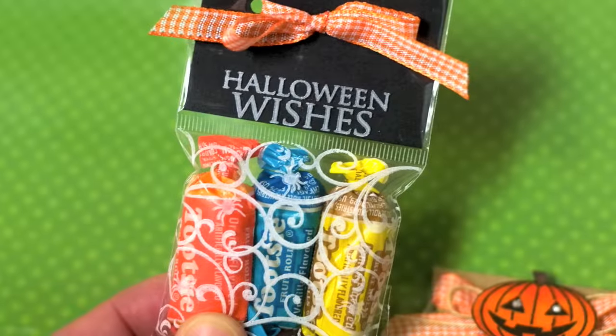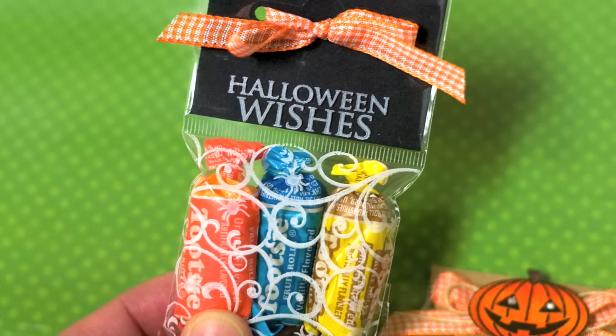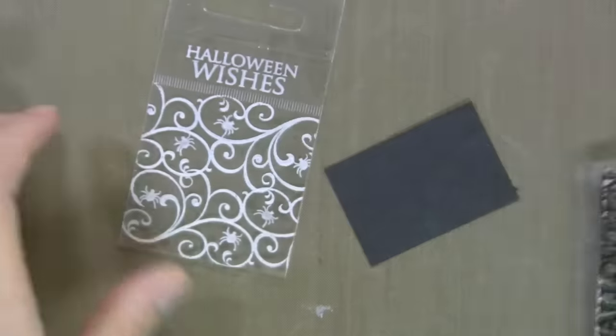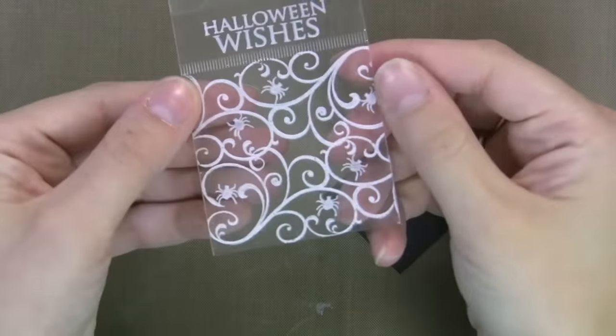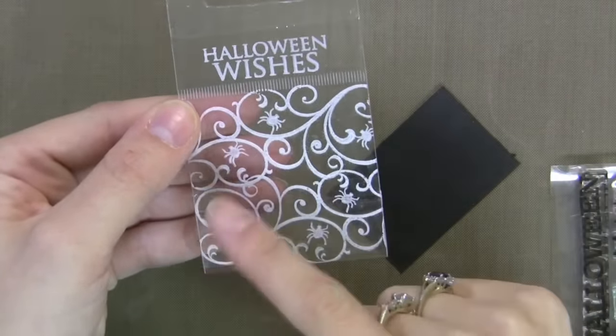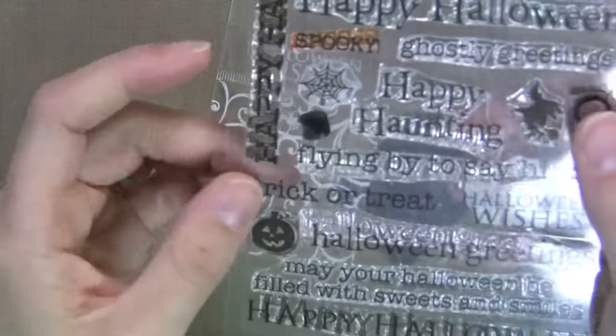This next one is using those gems where there's a pocket on the top and a pocket on the bottom. I first stamped a flourish along the bottom with white Stazon ink and a greeting on the top. And you can see in the flourish I stamped a few little spiders to it just to enhance it.